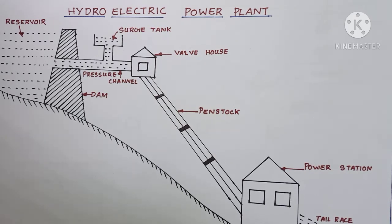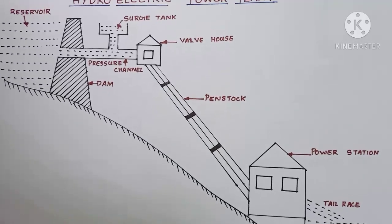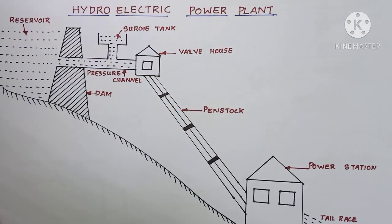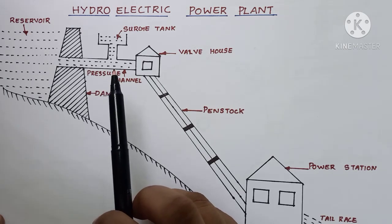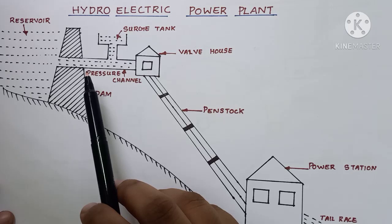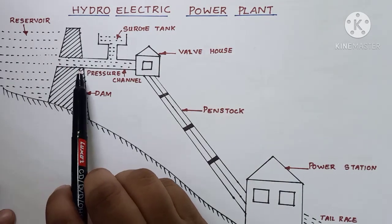Hydroelectric power plants have a very important role in the generation of electrical power. As the name suggests, hydroelectric means the hydraulic energy of water is converted into electrical energy at this power plant. Here in the schematic arrangement you can see the necessary requirements for a hydroelectric power plant. The basic requirement is the reservoir — reservoirs are the catchment area to collect the necessary water for power generation. The dam is a barrier that stores water and creates the necessary water head; it is normally made up of concrete or stones.